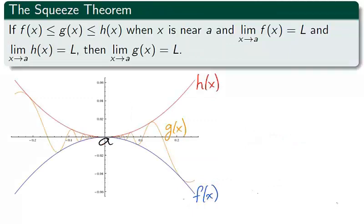The squeeze theorem takes this observation and doubles it up with a squeeze in the middle. That is, there are three functions h on top of g on top of f near a, and the limit of f and h are equal as x approaches a. This pinches the limit of the middle function g to the same limit as h and f as x approaches a.